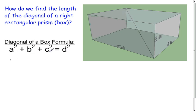So a, b, and c, in this case, are 3, 4, and 5. Those are the length, width, and height of the box. Oftentimes you'll see teachers write this as length² + width² + height² = diagonal².